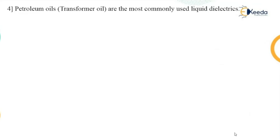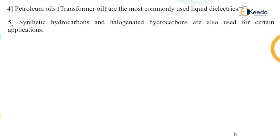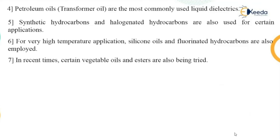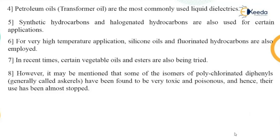There are different oils used — mainly transformer oil, which is used in transformers. It is a petroleum oil but named as transformer oil. There are also synthetic hydrocarbons and halogenated hydrocarbons which have certain applications. For very high applications, silicon oils or fluorinated hydrocarbons can be used. In recent years, vegetable oils or esters have also been tried. However, it must be mentioned that some isomers of polychlorinated diphenyls (PCBs) have been found to be very toxic and poisonous, and therefore they have been stopped from use.